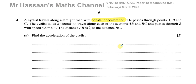He passes through points A, B, and C. The cyclist takes two seconds to travel along each section — A to B, and B to C — and passes through B with a speed of 4.5 meters per second. The distance AB is four-fifths of the distance BC.